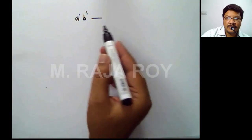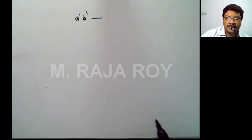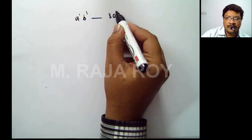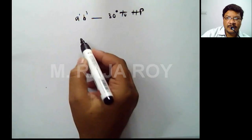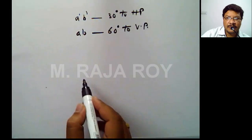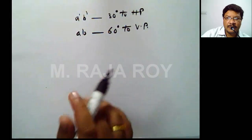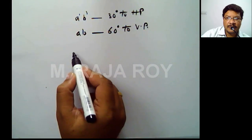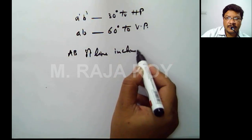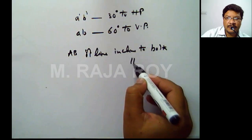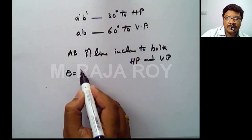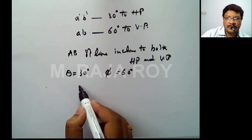When the circular lamina's front view — that means the diameter in the front view — is making an angle of 30 degrees to HP, and AB, the top view, is making 60 degrees to VP, you can assume this diameter as a straight line inclined to both HP and VP. It is just like AB is a straight line inclined to both, with inclinations theta equal to 30 degrees and phi equal to 60 degrees.